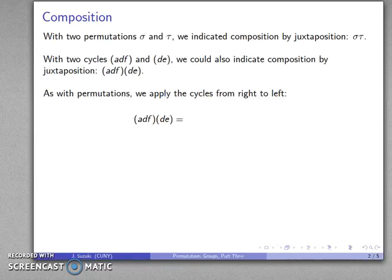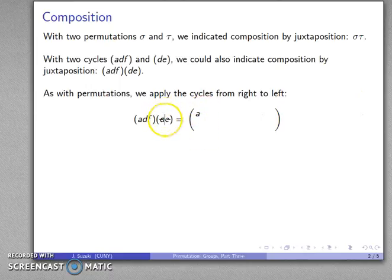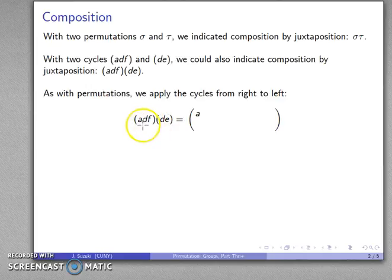So if I want to think about this, maybe I want to form the Cauchy table for this permutation. Let's see. What is A going to be replaced with? I'm going to apply this permutation first. And because this one doesn't have A in it, I can assume that nothing happens to A. But this one says A is replaced with D.